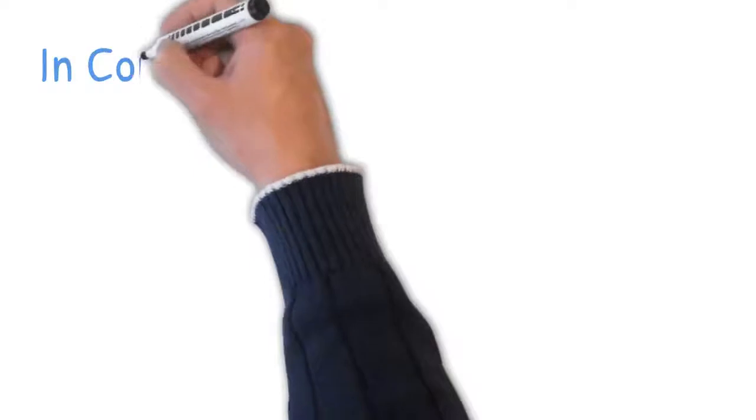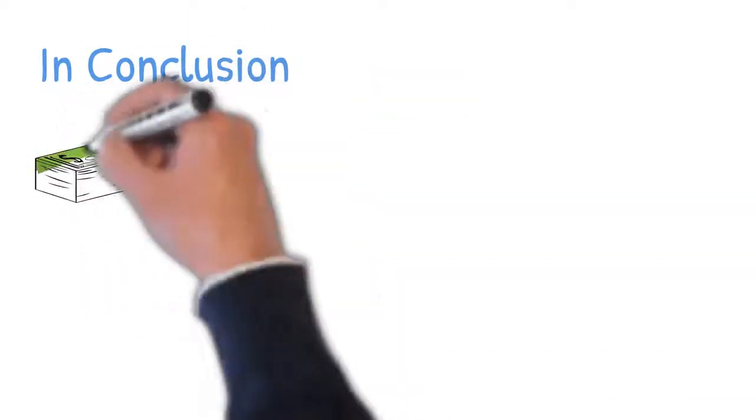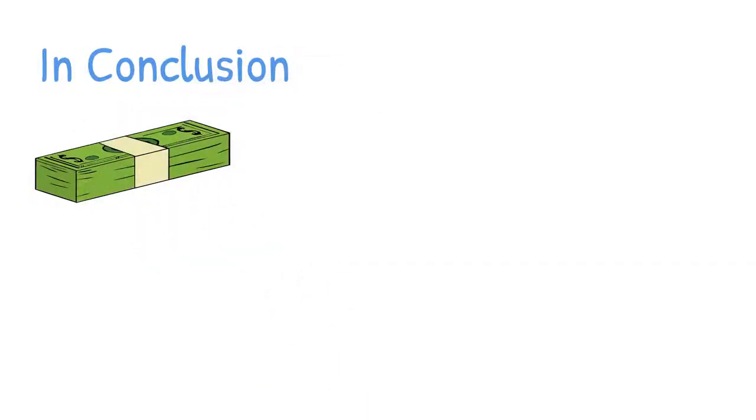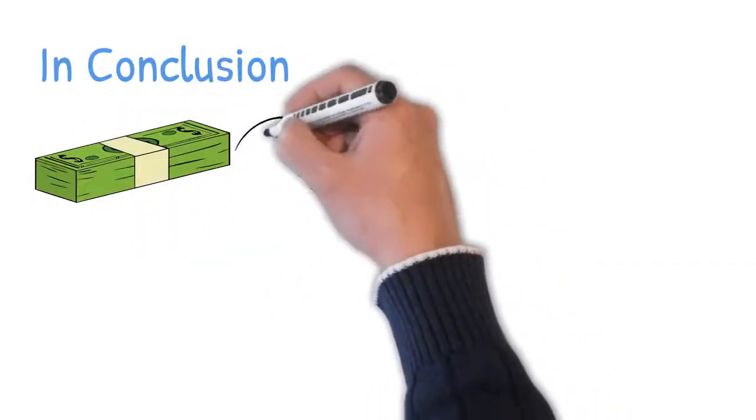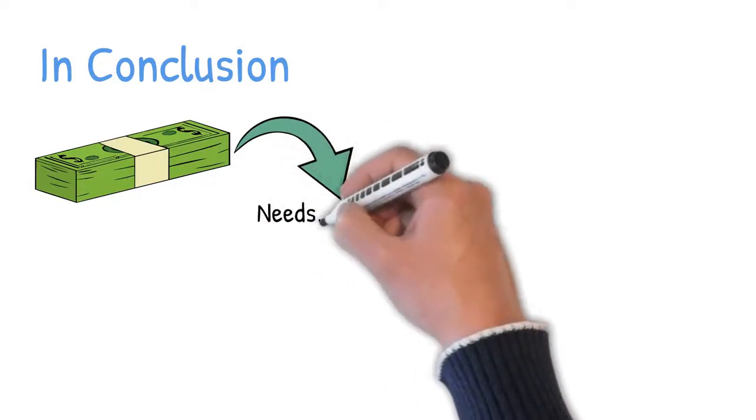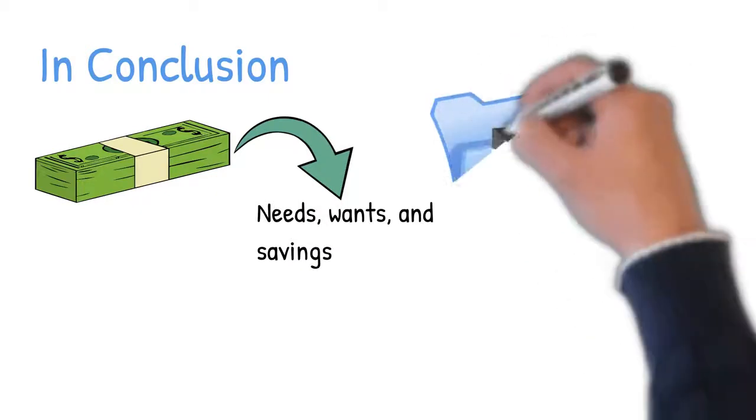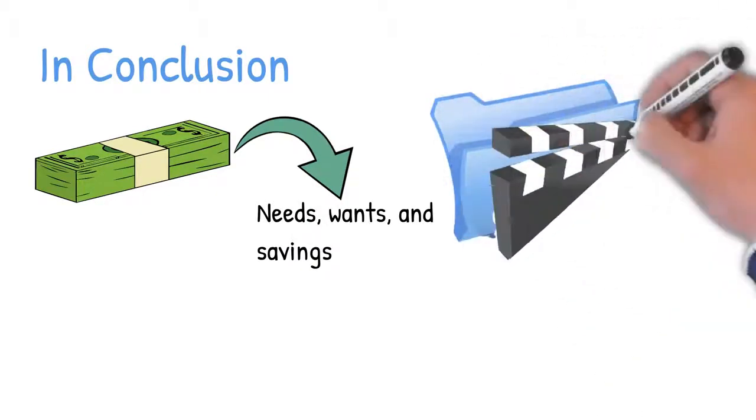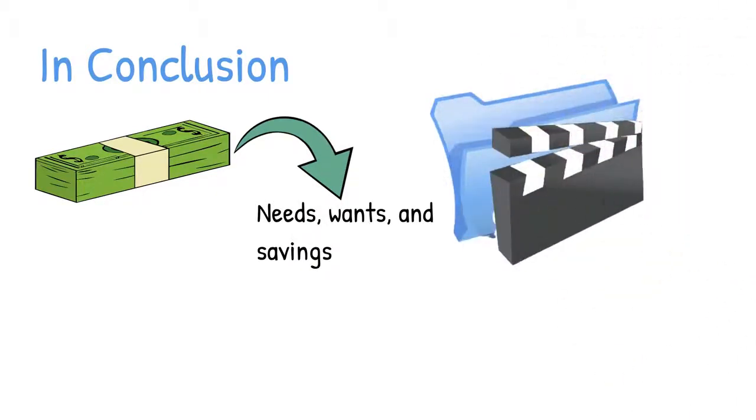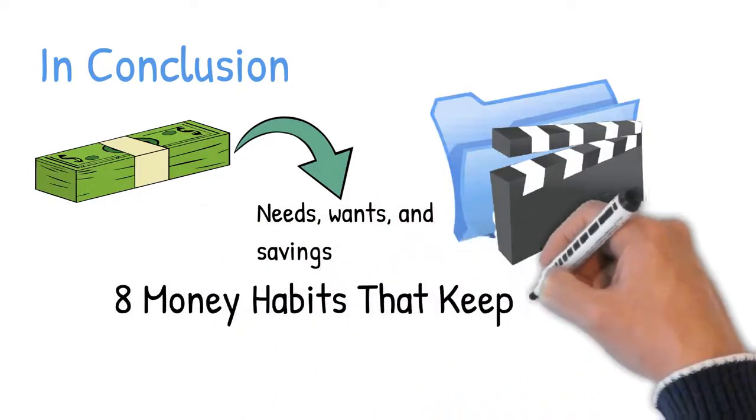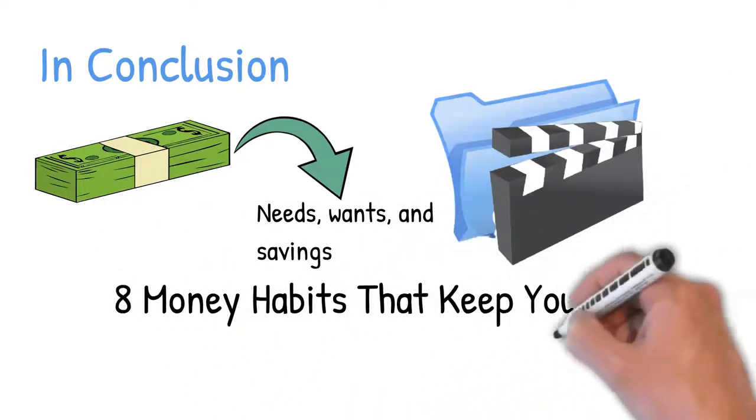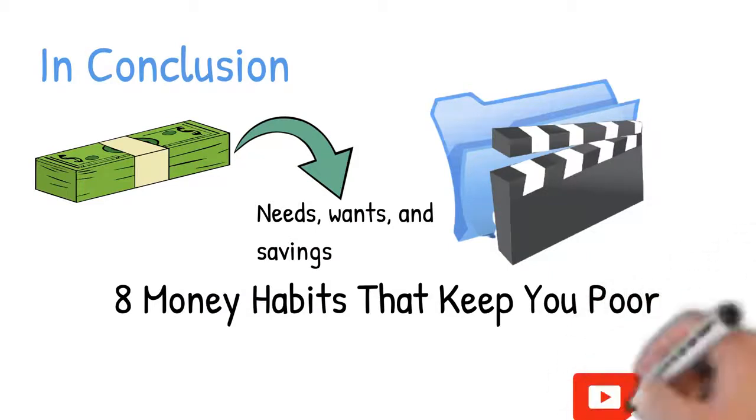In conclusion, the 50-30-20 rule is a nearly foolproof way for new budgeters, newlyweds, and newly employed people to manage money. It's easy to copy and focuses on the most significant spenders: needs, wants, and savings. So give it a try if you haven't been budgeting. I know this video was exciting and you loved it! Also, check out this exciting video about 8 Money Habits That Keep You Poor and other life-changing resources in the description below. If you haven't subscribed yet, you're definitely missing out. See you in the next one!